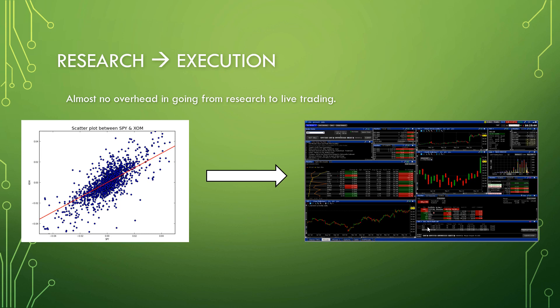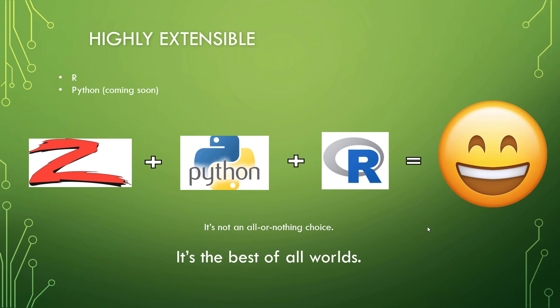With Zorro there is almost no overhead to go from strategy research into production — into live trading — because Zorro goes from research environment to execution engine literally with the flick of a switch. Your research code can be used directly for execution, which saves a lot of time and prevents potential errors. Out of the box, Zorro has support for trading with Interactive Brokers, OANDA, Dukascopy, FXCM, IG, Ally Invest, and any broker offering MetaTrader 4 or MetaTrader 5.